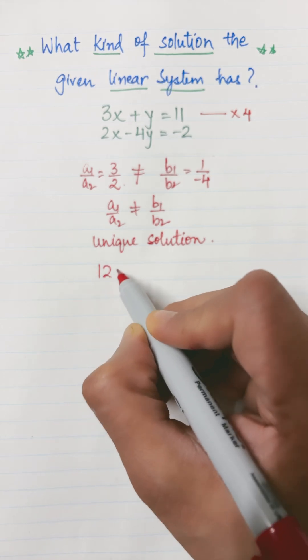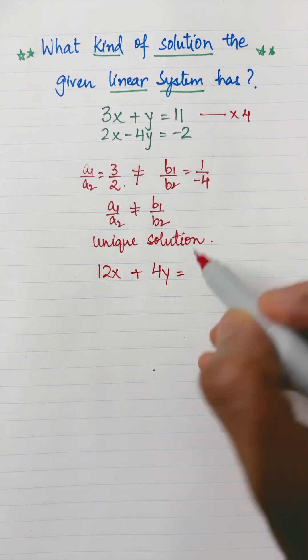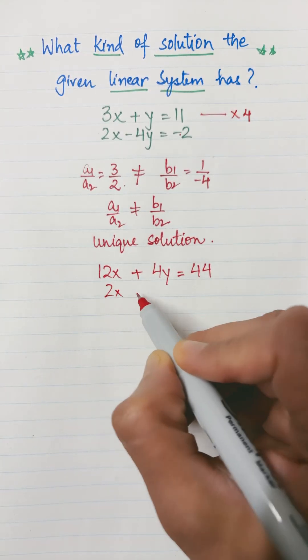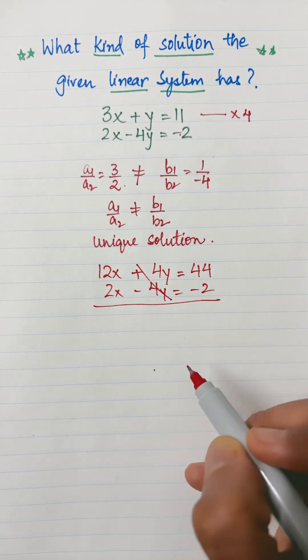So 4 times 3x is 12x, plus 4 times y is 4y, equals 4 times 11 is 44. The second equation stays the same: 2x minus 4y equals minus 2. Plus 4y minus 4y is 0.